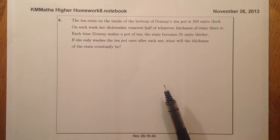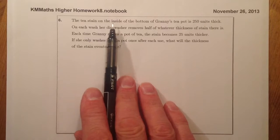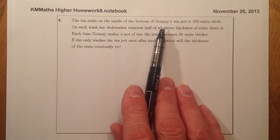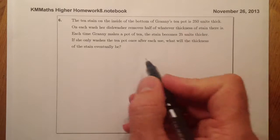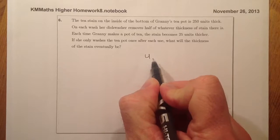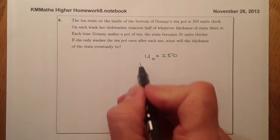So what I'm going to do is gather the information that I can see and put that together. The tea stain inside the bottom of Granny's teapot is 250 units thick. So I'm thinking that U₀ is going to be equal to 250. That's going to be my starting point.